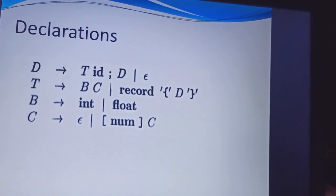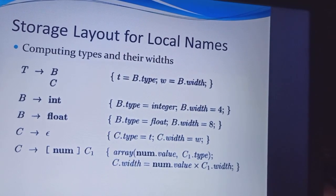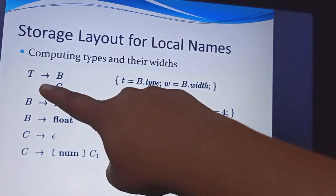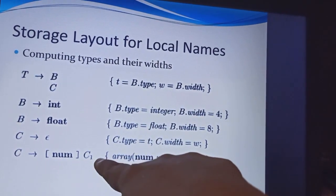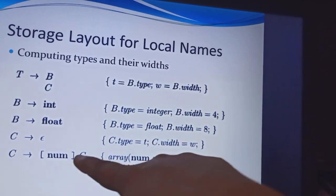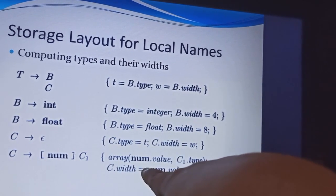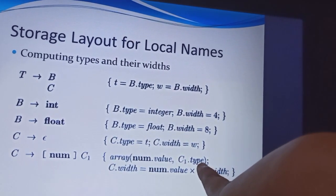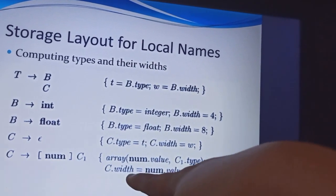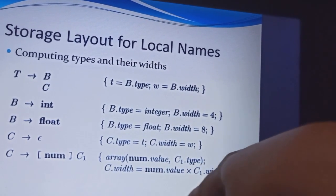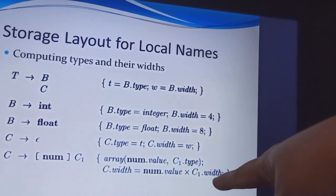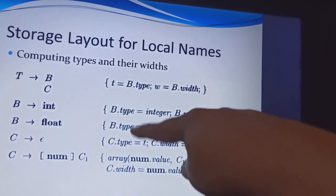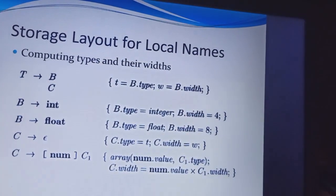This is the declaration for type equivalence and this is the storage layout for the local names. How we are going to store it: the first expression will be t tending to c. If you want to see this expression, c tends to num c1. We take the number value as an array value of type c1 comma c1. Next, to get the c1 value, we multiply the number value with c1 type.